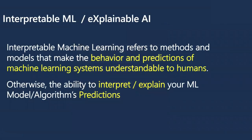What is interpretable machine learning, or explainable AI? Interpretable machine learning refers to methods or models that make a particular machine learning system's prediction or behavior understandable to human beings. If you have built a model — machine learning, artificial intelligence, or statistical — and you understand what the prediction is and how it's made, that is called interpretable machine learning, also known as explainable AI or XAI.